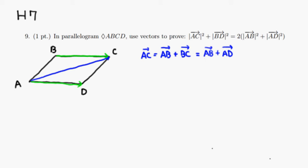So BD will be here. So vector BD can be written as, we can go backward on vector AB. So it's a negative AB, and then forward on vector AD.